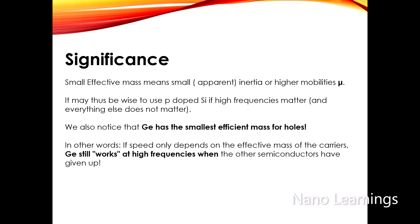Germanium has the smallest effective mass for holes. This means that holes respond quickly to the acceleration force of an electric field. In other words, if speed depends on the effective mass of the carrier, germanium still works at higher frequencies where other semiconductors have given up.